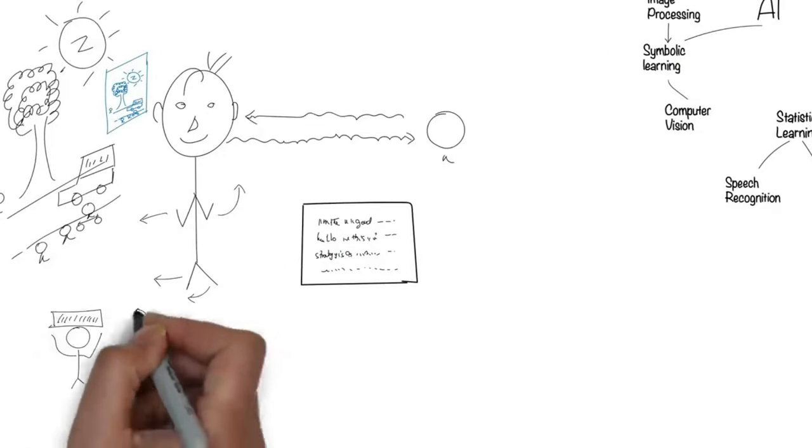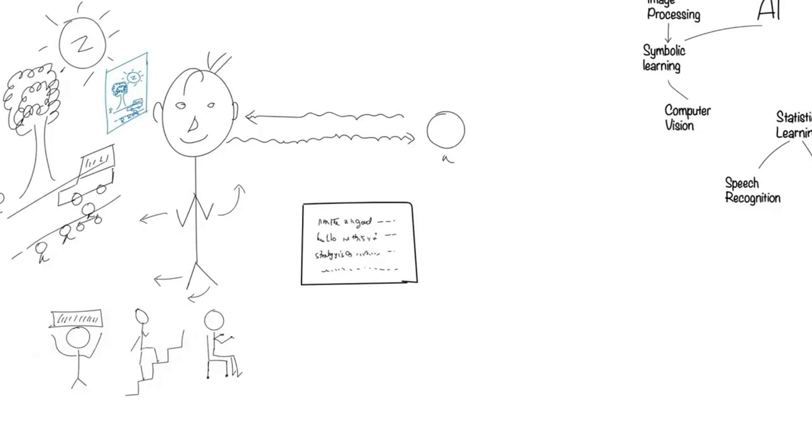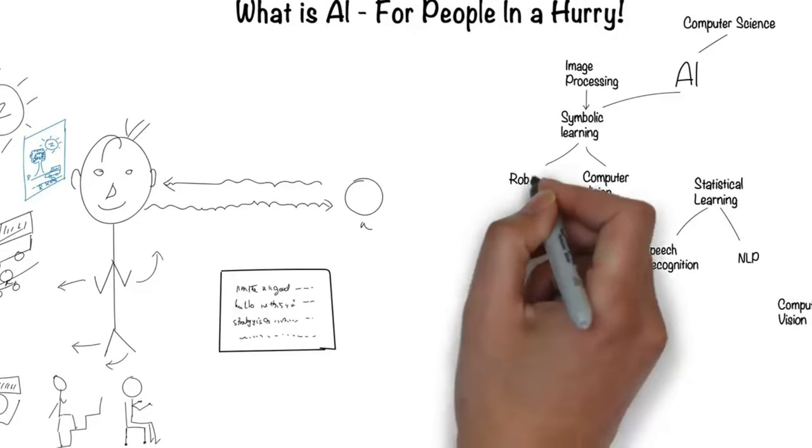Humans can understand their environment and move around fluidly. This is the field of robotics.